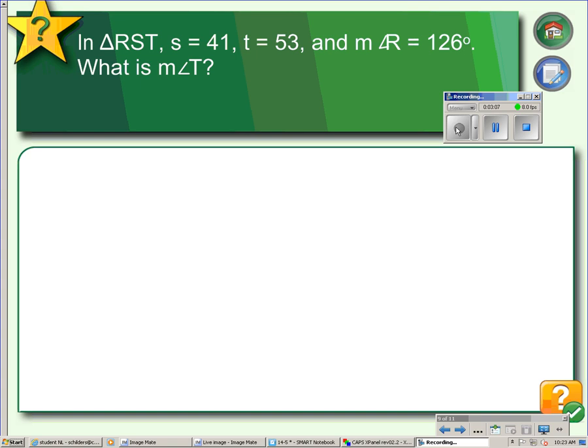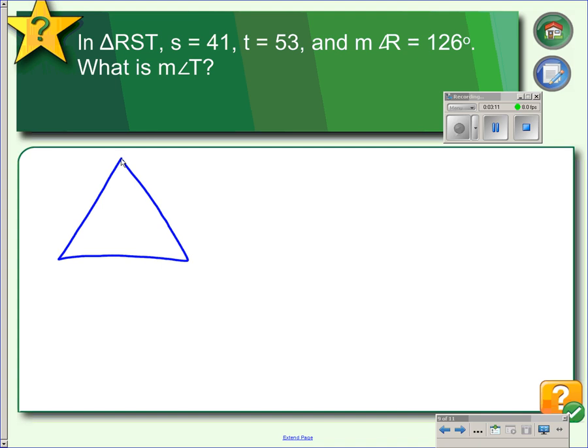This is an example exactly like the last one. In triangle RST, side s is 41, side t is 53, and angle R is 126 degrees. We want to find the measure of angle T.